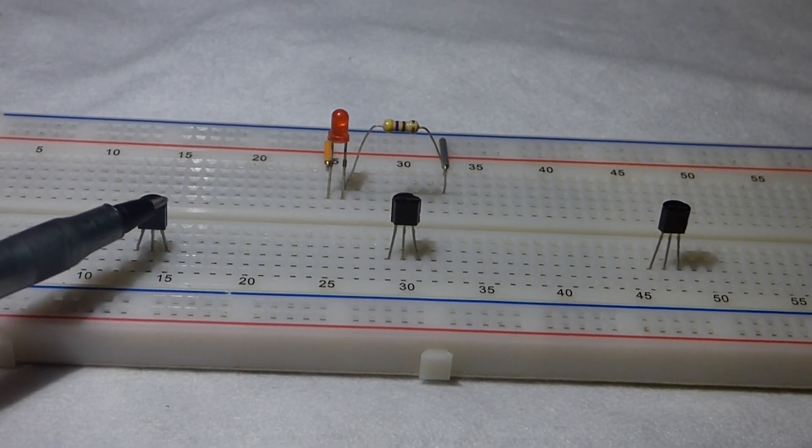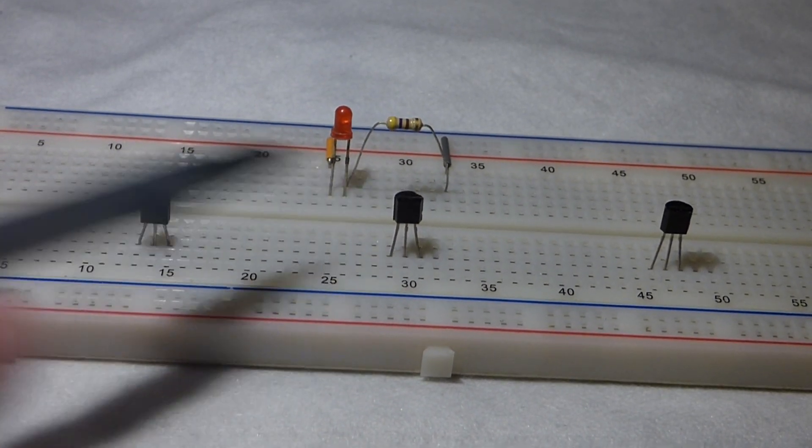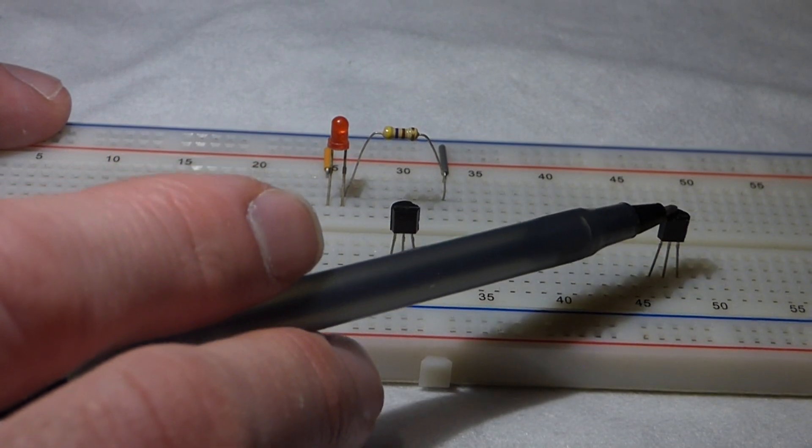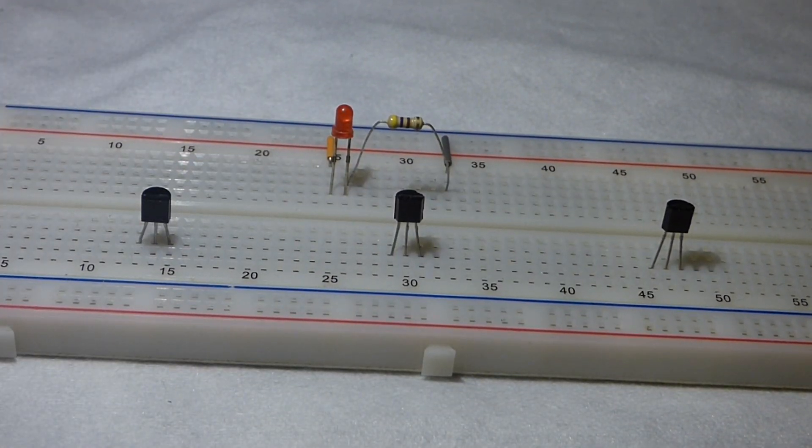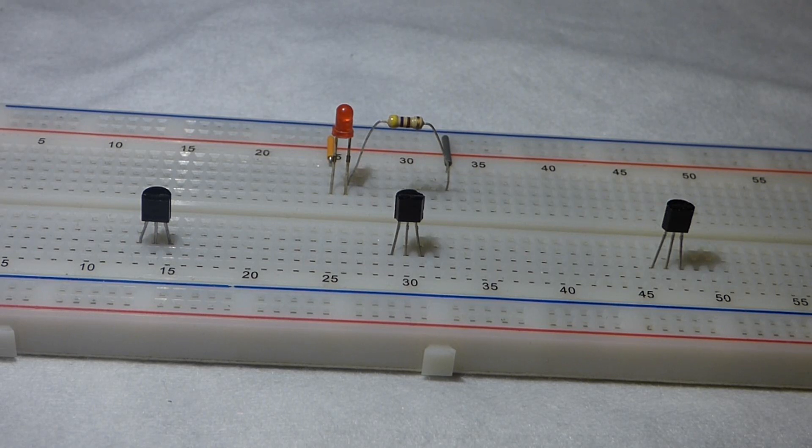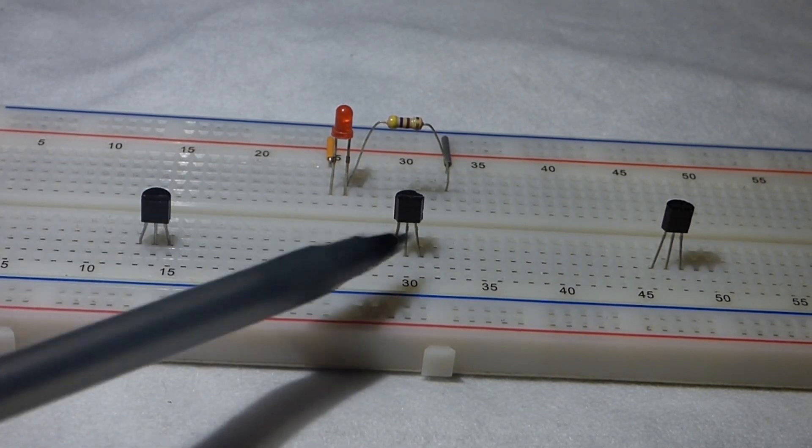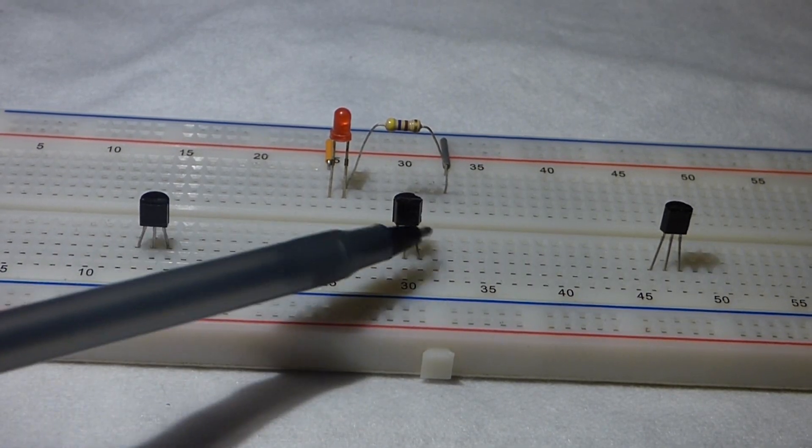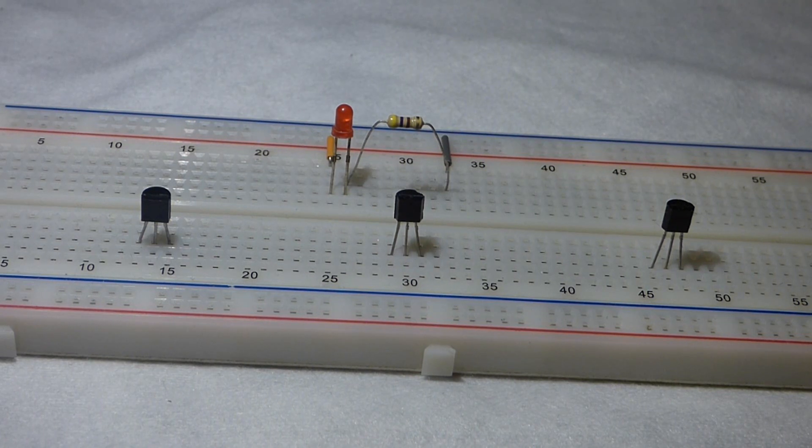The transistors have 3 instead of 2. So, this one has NPN. This one also has NPN type materials. Whereas, this one has PNP type materials. So, even though they're basically the same component, you actually wire these 2 transistors in the opposite way of this transistor. Depending on what you want the transistor to do.